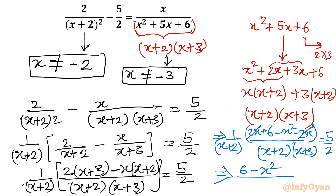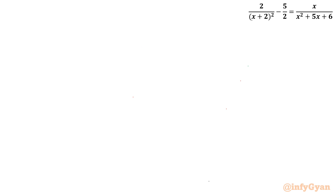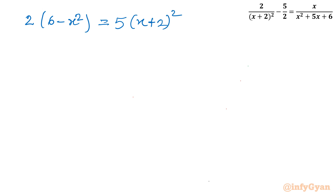So overall, the numerator simplifies to 6 minus x², and the denominator is (x+2)² times (x+3), equal to 5 over 2. Now this equation looks simple. By cross multiplication I write (6 minus x²) times 2 equals 5 times (x+2)² times (x+3).